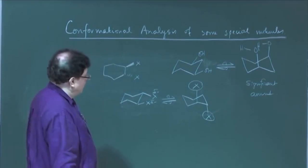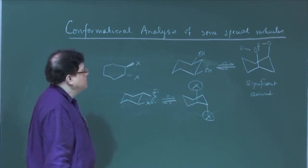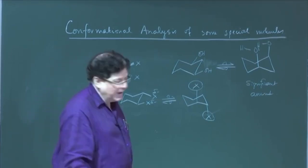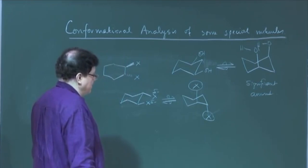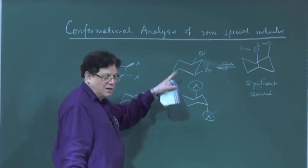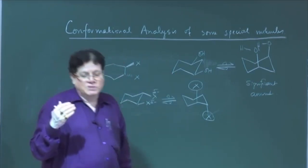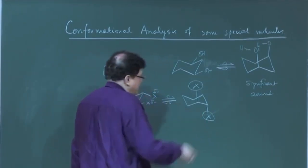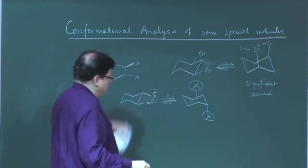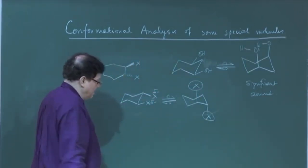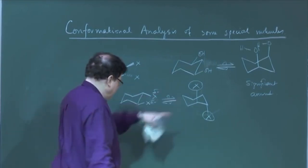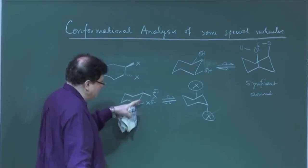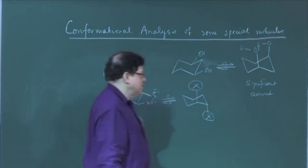These are examples where the conformations with groups in the axial position are present in significant amount. Earlier we considered only steric and torsional strain, but now we are bringing in other parameters like intramolecular hydrogen bonding or dipole-dipole repulsion that can destabilize the diequatorial system or stabilize the diaxial system.